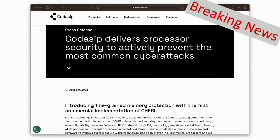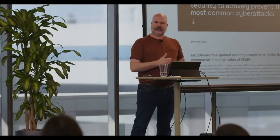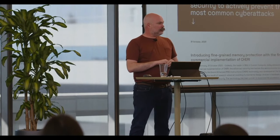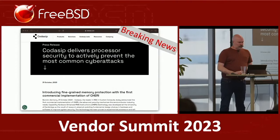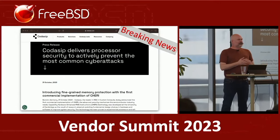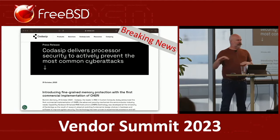Some breaking news from two days ago: Codasip announced — they're a RISC-V IP company — that they're now selling a CHERI core. What I've been told is it's a 64-bit application-class core with an MMU, initially intended to run Linux, so it will definitely run FreeBSD with modest effort. Real hardware is in the pipeline. CHERI is becoming a real thing, heading towards something you can actually buy.